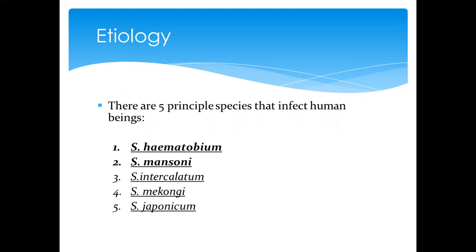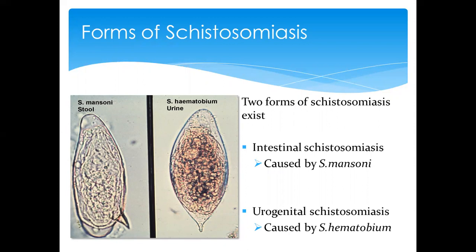Focusing on the etiological principles, we have five main species of Schistosoma that cause disease in humans: Schistosoma haematobium, Schistosoma mansoni, Schistosoma intercalatum, S. mekongi, and S. japonicum. The most important ones are haematobium and mansoni, and those are the ones we are going to focus on.